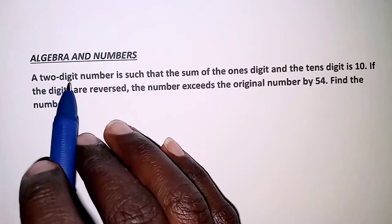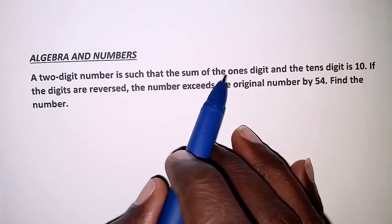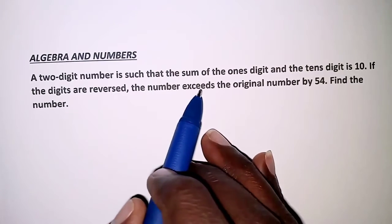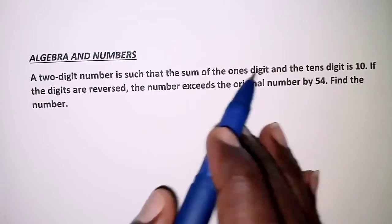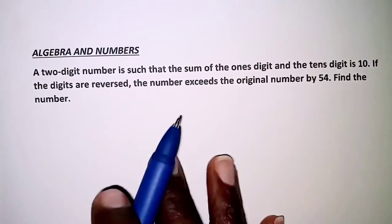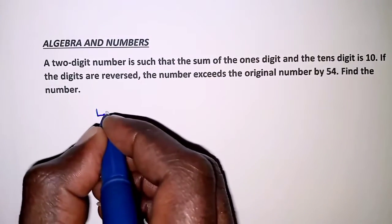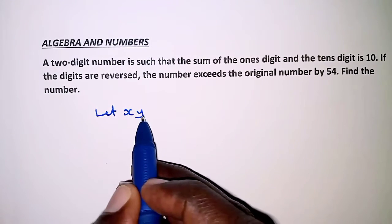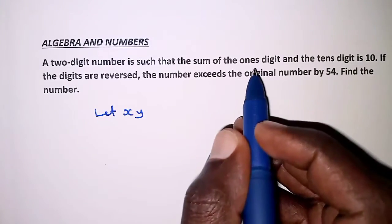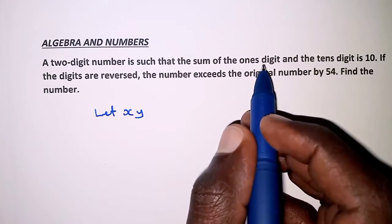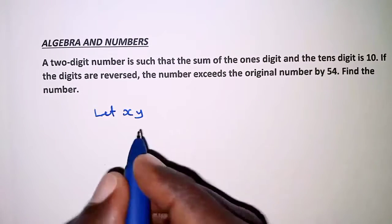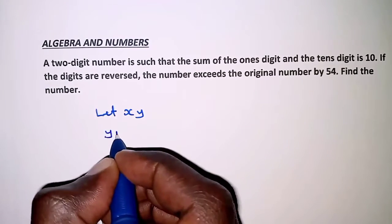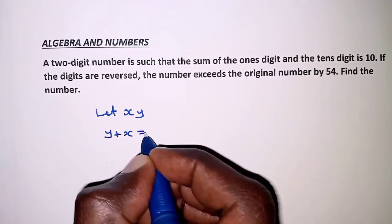The question reads: a two-digit number is such that the sum of the ones digit and the tens digit is 10. If the digits are reversed, the number exceeds the original number by 54. Find the number. We are going to let the number be XY, so that the digits are X and Y. The ones digit is Y and the tens digit is X, so Y plus X equals 10.